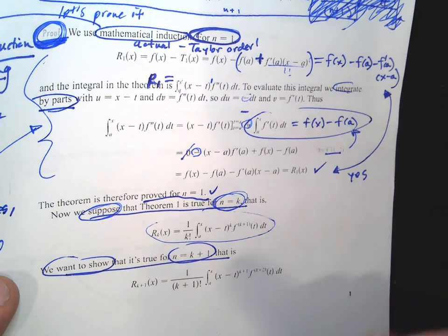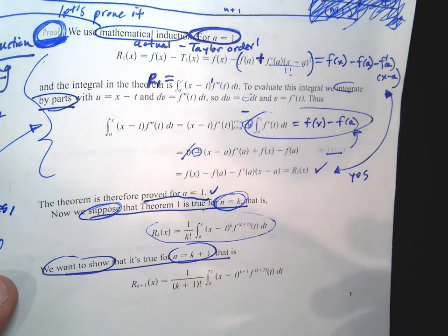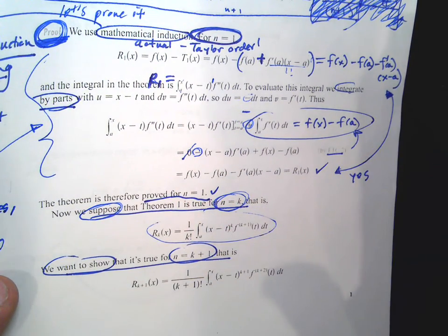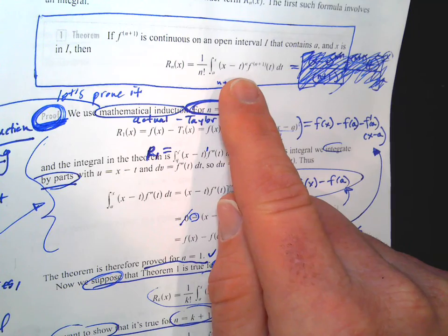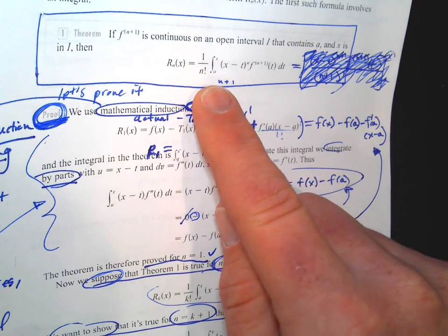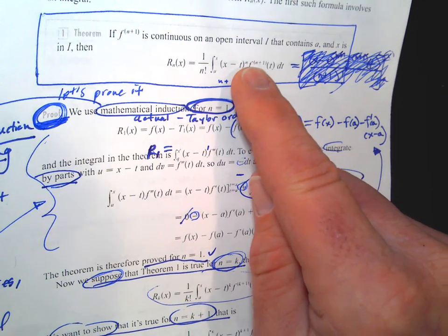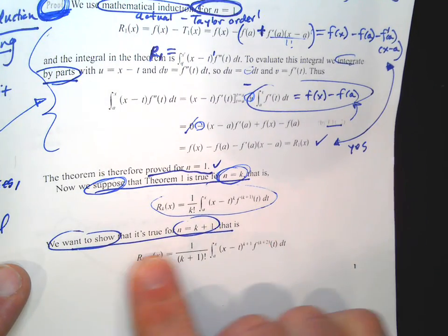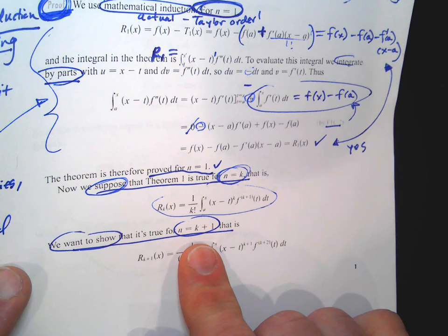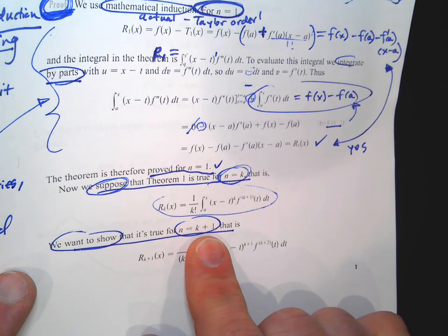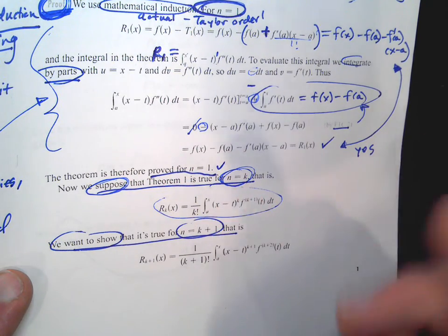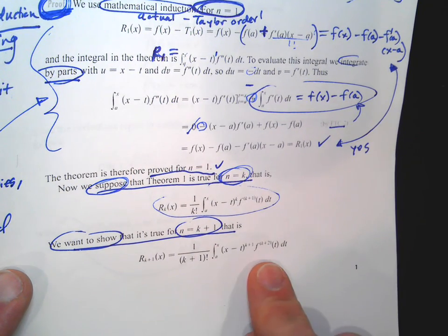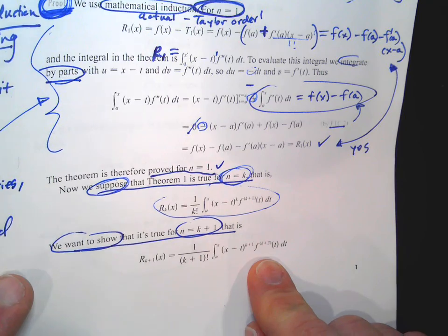Now we say, let's use n equals k — any value of n. We rewrite the remainder formula, plugging in n equals k: it's 1 over k factorial, integral from a to x of x minus t to the kth power times f to the k plus 1 derivative. We want to show that it's true for n equals k plus 1. We're going to say it's true for any value of k, and then try to prove that it's true for the next one. Here's the expression for when you plug in n equals k plus 1.